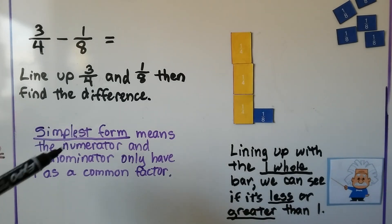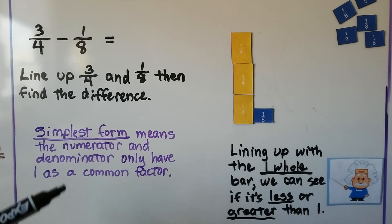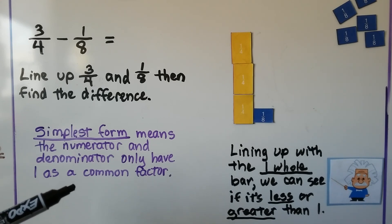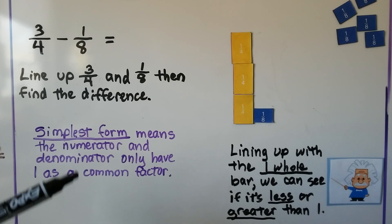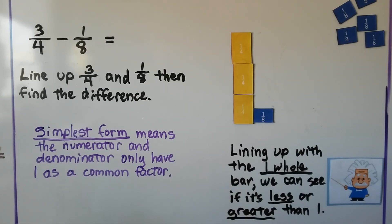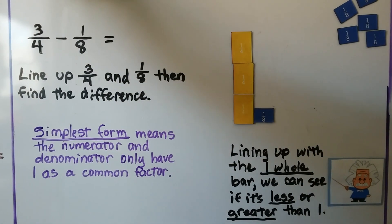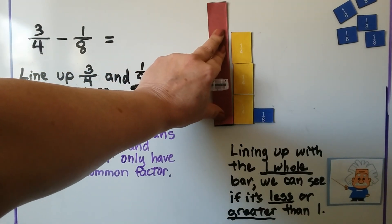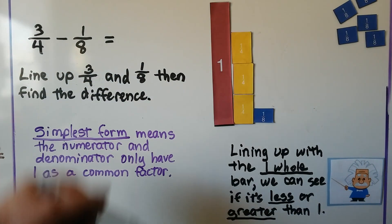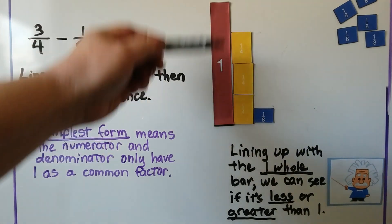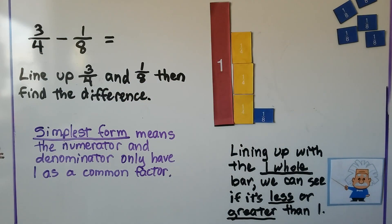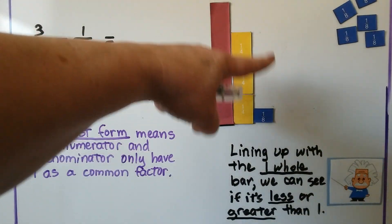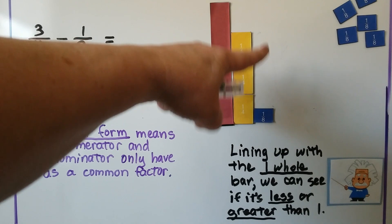We want it to be in the simplest form, which means the numerator and denominator will only have one as a common factor. We'll get into this more in a couple more lessons. We can compare it to one whole and see where three fourths is relative to one whole — it's a little bit smaller than one whole. We need to find this amount right here.